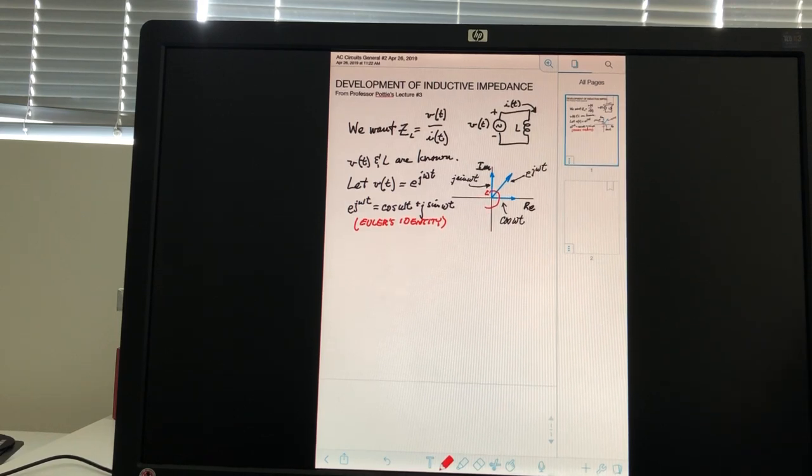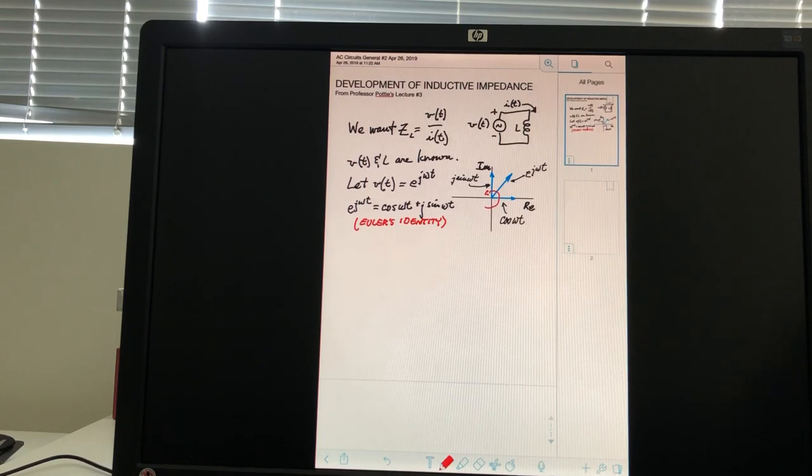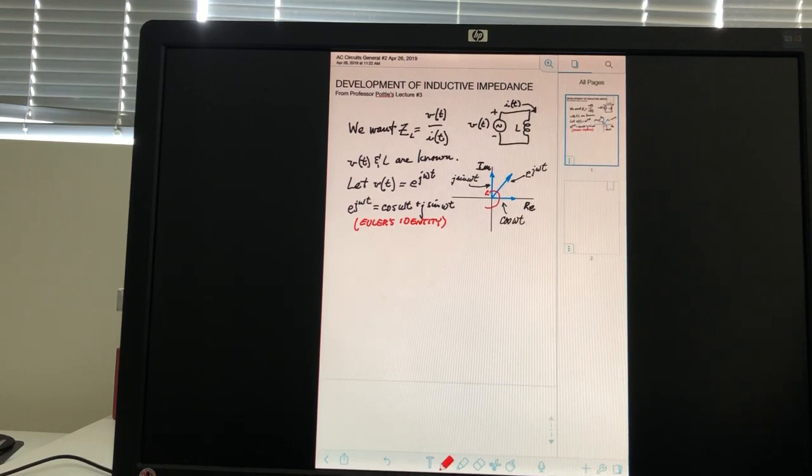But we're picking it at a single point in time, just to show the relationship between the components and the resultant. So, now, just given that, how do we proceed here to try to find the relationship between ZL, V of T, and I of T, which is what we want? So,